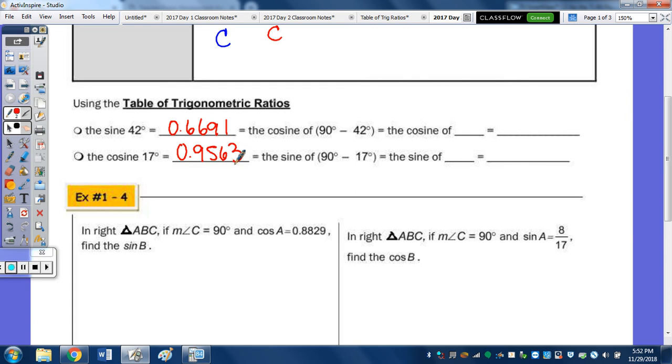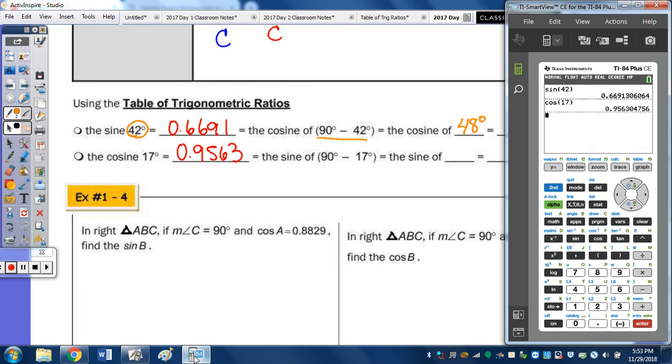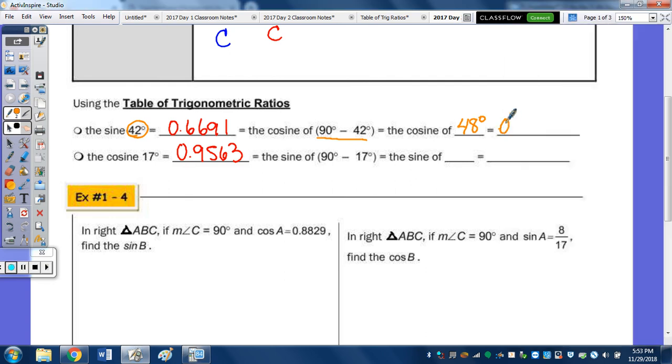Now that ratio should be equal to the cosine of the complement of 42. So to find the complement of 42, we're going to subtract 42 from 90. And that is equal to the cosine of 48 degrees. So we go to the calculator, and we type in the cosine of 48, we do see that it's equal to the sine of 42, which is 0.6691.